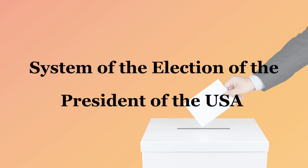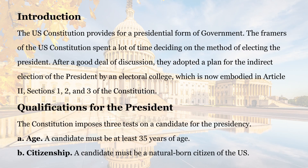System of the Election of the President of the USA. The U.S. Constitution provides for a presidential form of government. The framers of the U.S. Constitution spent a lot of time deciding on the method of electing the president. After a good deal of discussion, they adopted a plan for the indirect election of the president by an electoral college, which is now embodied in Article 2, Sections 1, 2, and 3 of the Constitution.